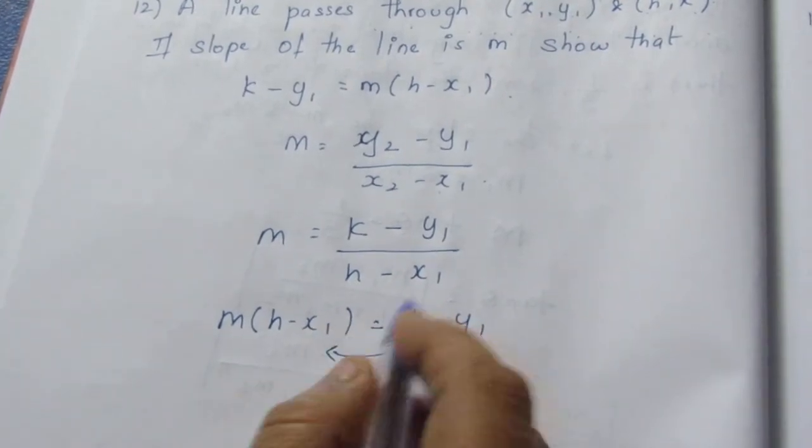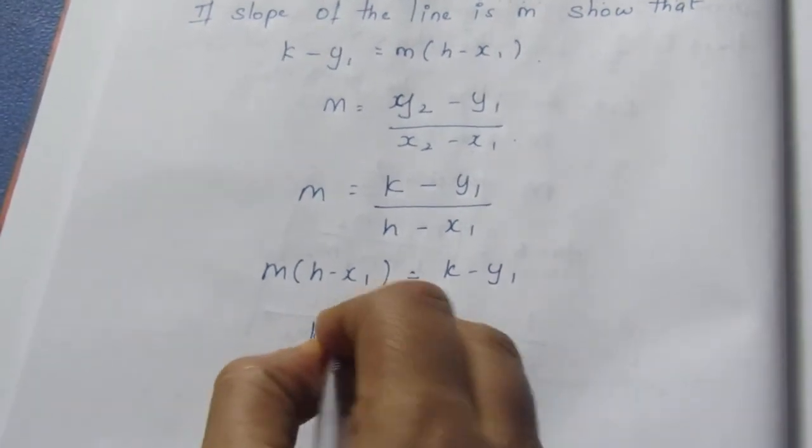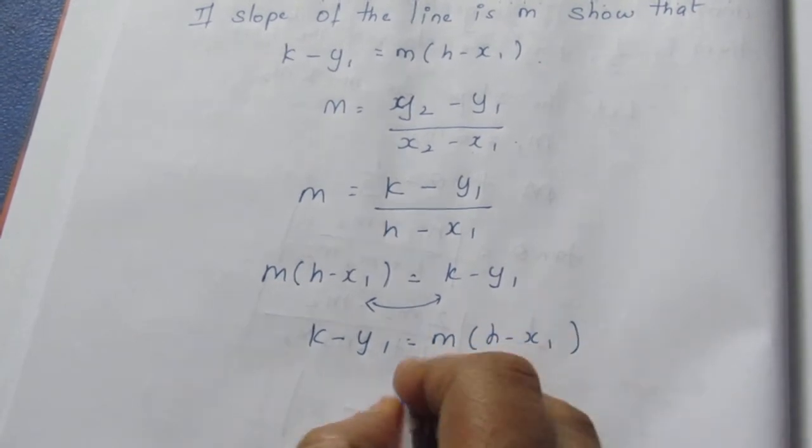Change your places. This comes to the side and this comes to the side. It becomes k minus y1 is equal to m into h minus x1. This we need to prove. Hence proved.